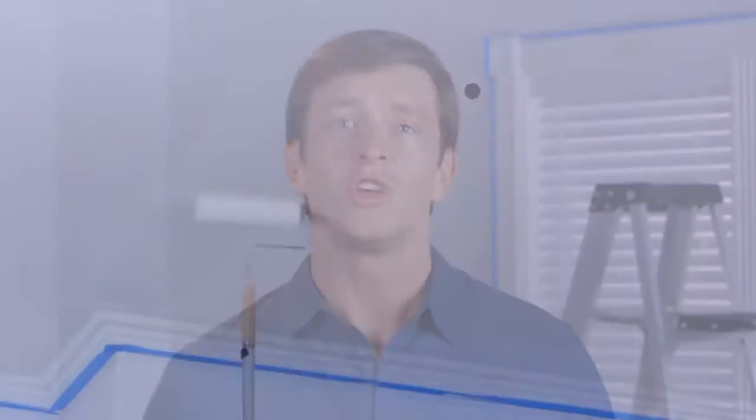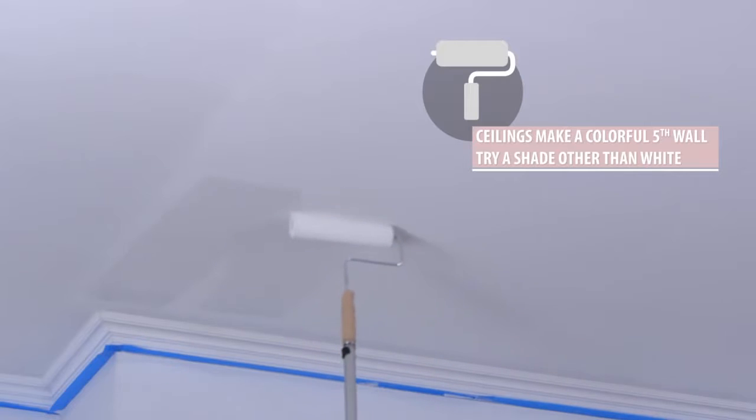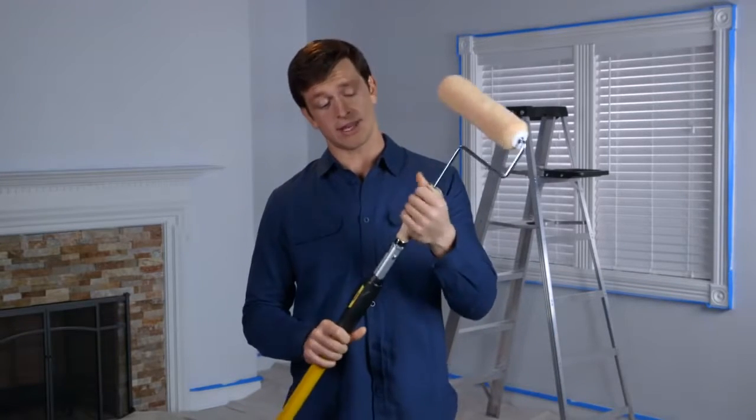Now, here's the trick. You'll want to switch over to your roller while the paint strip along the edges is still wet. That'll give you the best results. For higher ceilings, or just to make things easier, attach your roller to an extension pole like this.